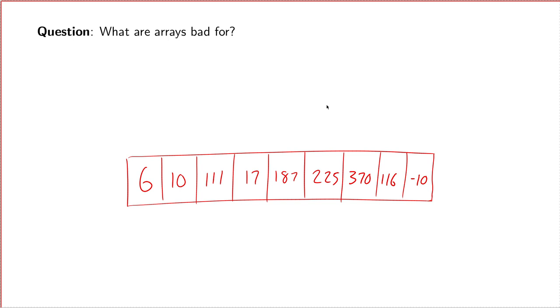What about, what are arrays bad for? Notice that this array is full. It already has all nine elements. If I ask, could you insert the value 100 at the end of this array, your answer is no, you can't. It's impossible. The array is full. Once you've made an array, its size is permanent. If you fill it up, you're out of luck.